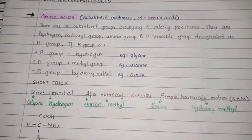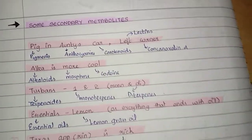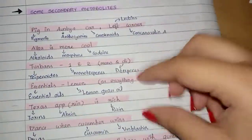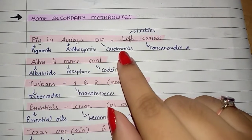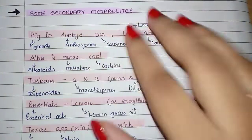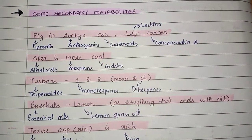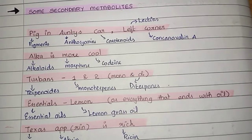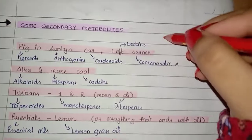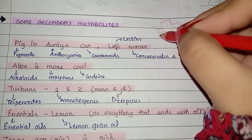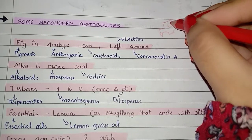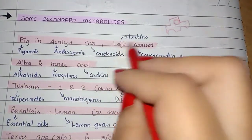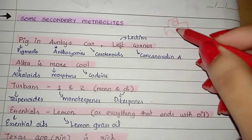Now, some secondary metabolites. I have made a story to learn this. First: 'pig in auntie's car, left corner.' Imagine a car — an auntie's car. In the left corner of that car, there is a pig. Pig for pigments, auntie for anthocyanin, car for carotenoids, and left corner for lecithins and concanavalin A.